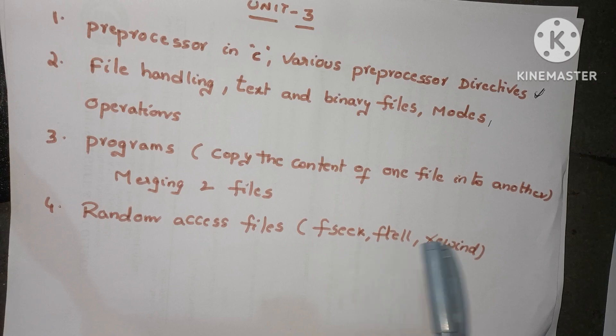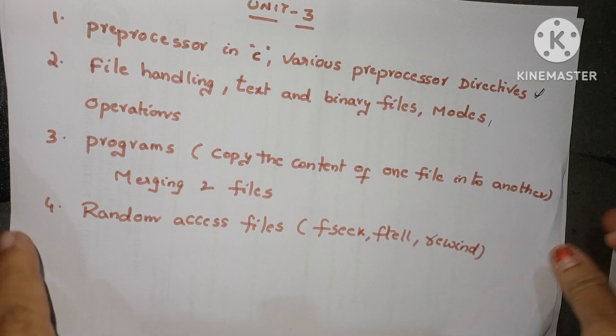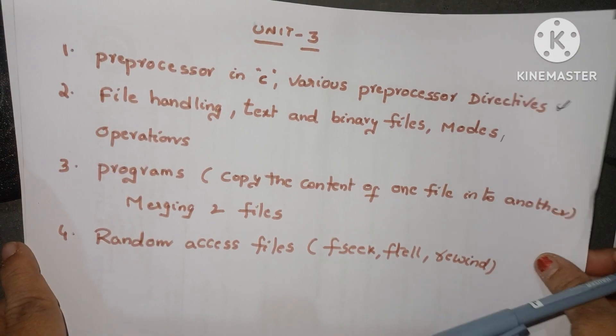The random access file operations include fseek, ftell, and rewind. Unit 3 is a very short unit, so read this unit first before going to other units.